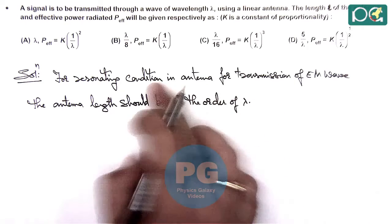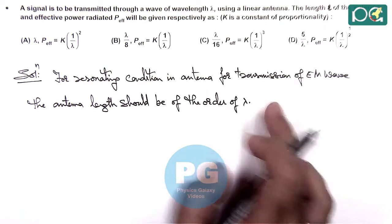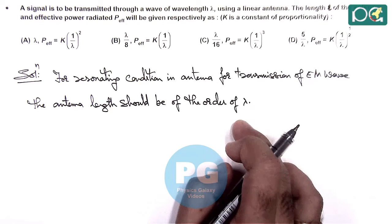And the resonating condition is better if it is given to be equals to lambda by 2 or lambda by 4 in half wave or quarter wave antenna.